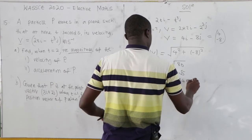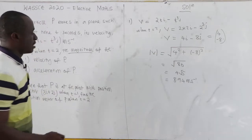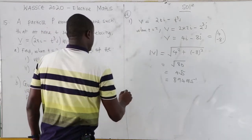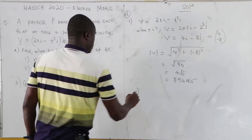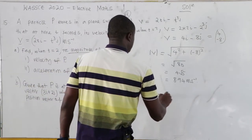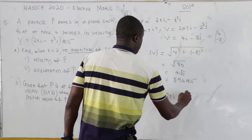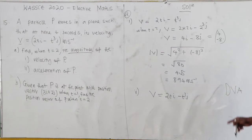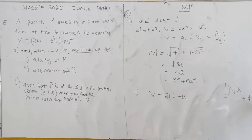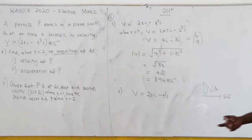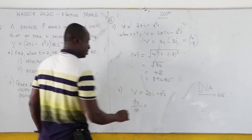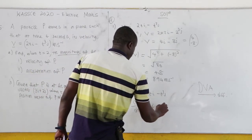Now the second part says find the acceleration. We have velocity v = 2ti minus t³j. Recall: displacement, velocity, acceleration — differentiating moves you forward. So if you have velocity and want acceleration, you differentiate. Our dv/dt gives us 2i minus 3t² j.